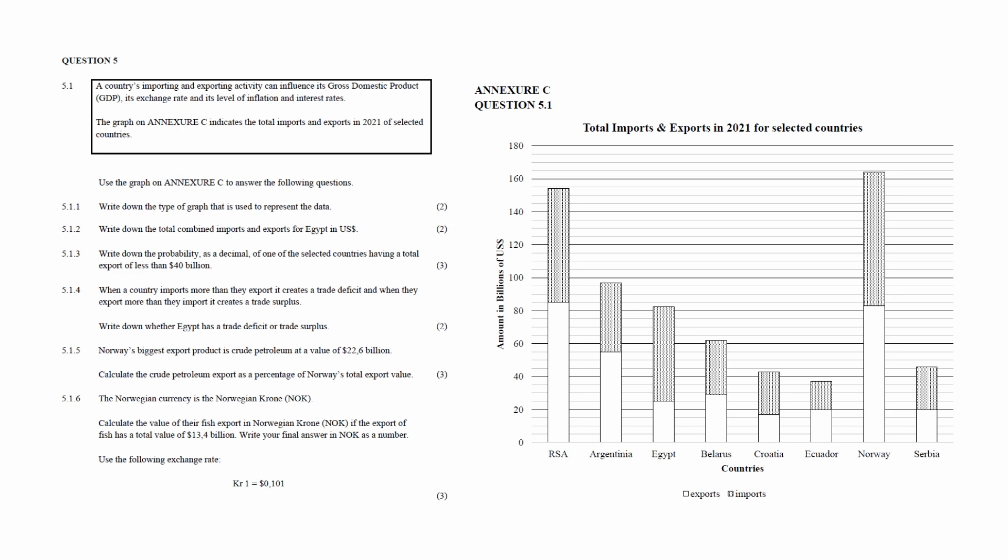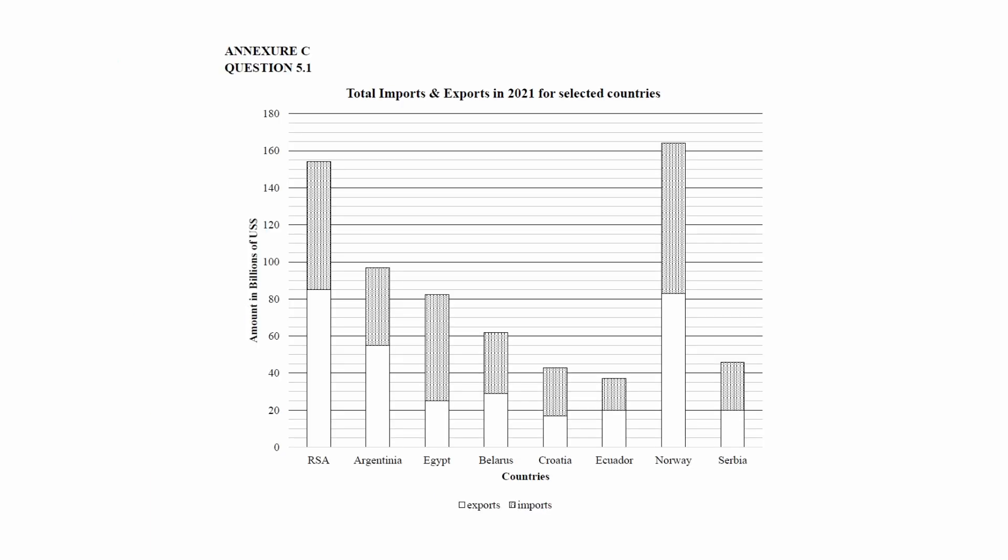You are given a context that states that a country's importing and exporting activity can influence its gross domestic product (GDP), its exchange rate, and its level of inflation and interest rates. You are given a graph on Annexure C that indicates the total imports and exports in 2021 for selected countries.